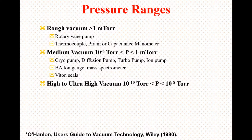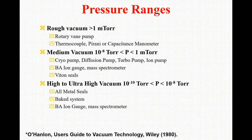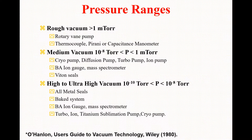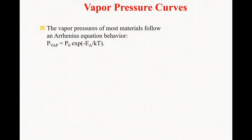High to ultra-high vacuum lies in the range of 10 raised to power minus 8 to 10 raised to power minus 10 torr and beyond. This range uses all-metal seals, baked systems, ion gauges, and mass spectrometers for measurement. It can be produced by turbomolecular pumps, ion pumps, ionization pumps, titanium sublimation pumps, and cryogenic pumps.